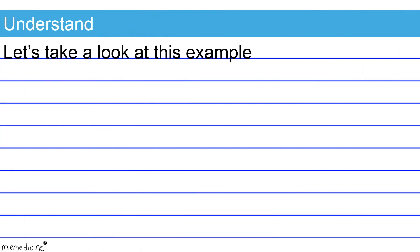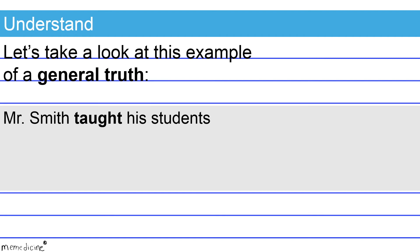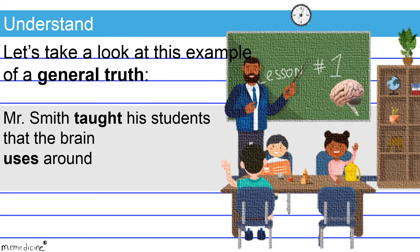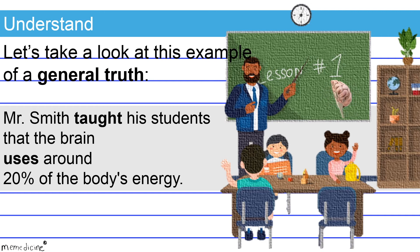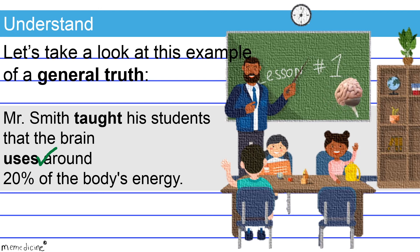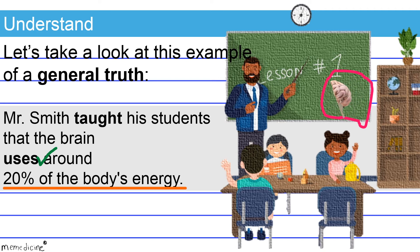Let's take a look at this example of a general truth: Mr. Smith taught his students that the brain uses around 20% of the body's energy. The sentence shifts to the present tense to state a general truth. This shift is appropriate in this instance. We shift from a lesson Mr. Smith gave in the past to a description of a biology fact — a general truth — that he shared during this lesson. Hence, our use of a shift to the present tense is warranted.